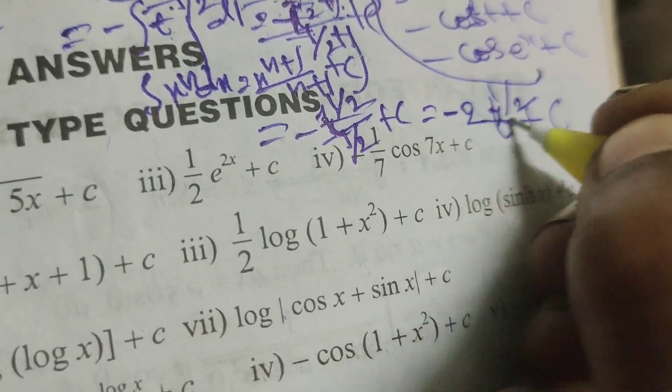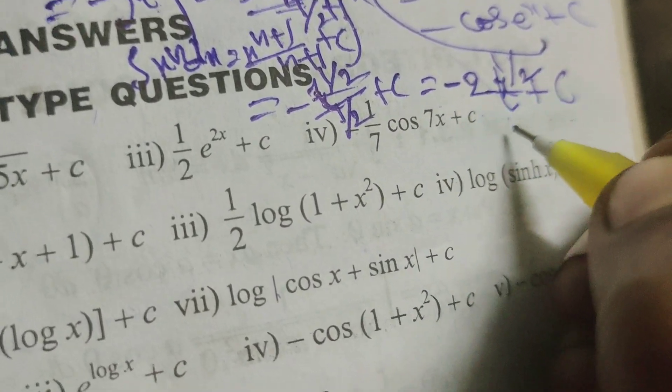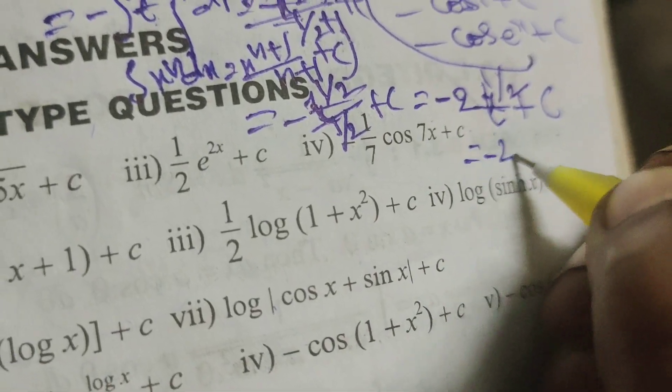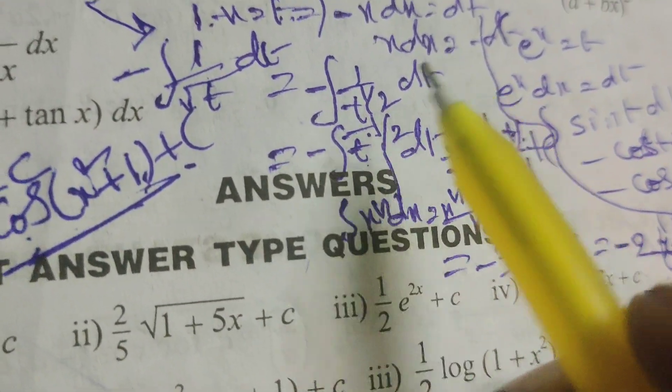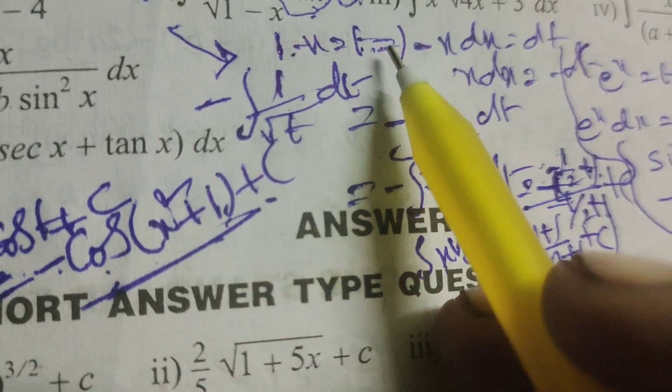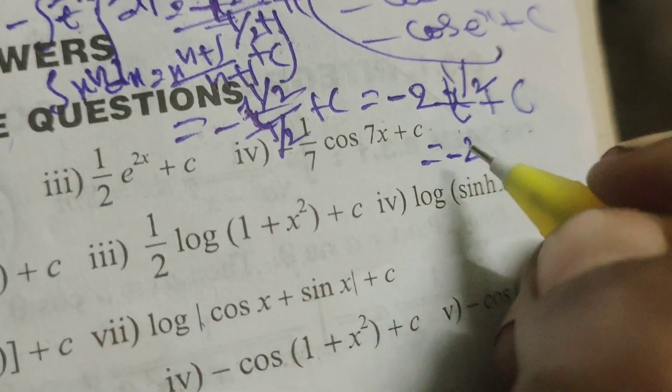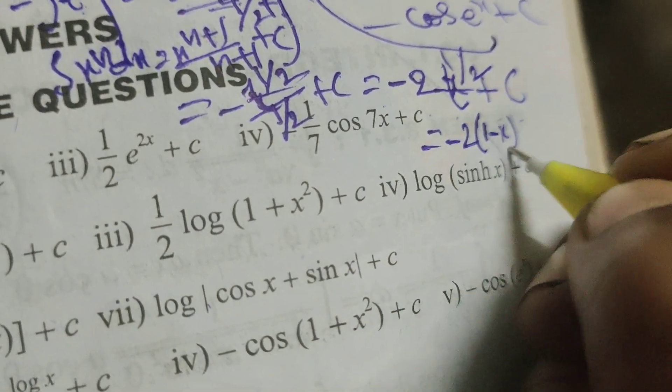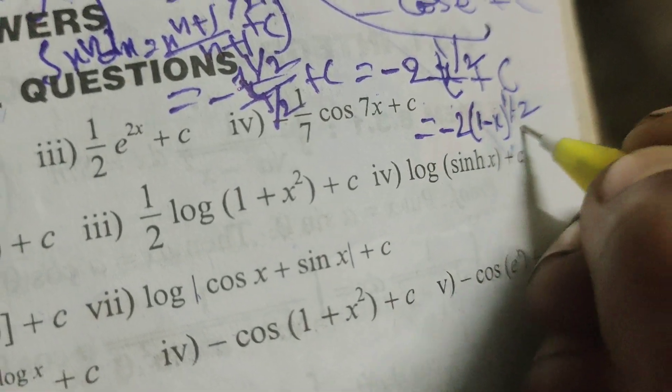So minus 2 t power 1 by 2 plus c. Now what is our substitution? t here, t means 1 minus x. Therefore minus 2 into 1 minus x whole power 1 by 2 plus c.